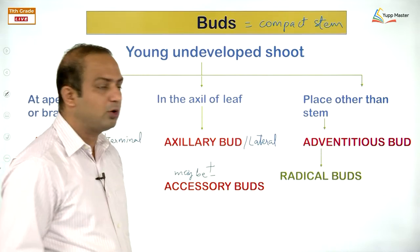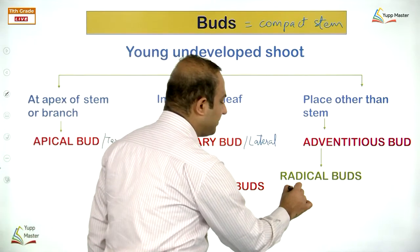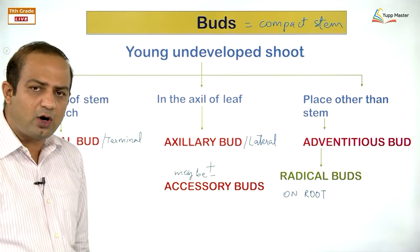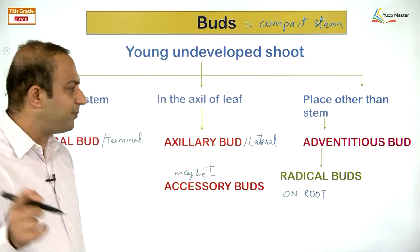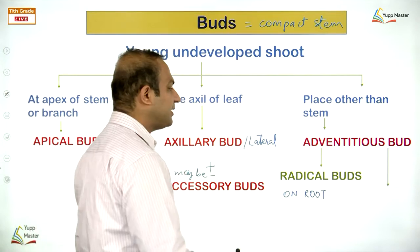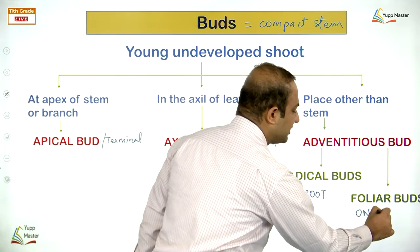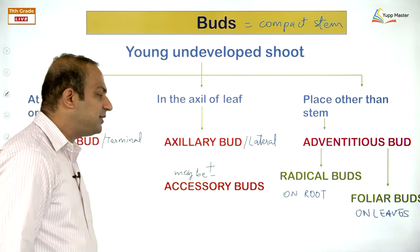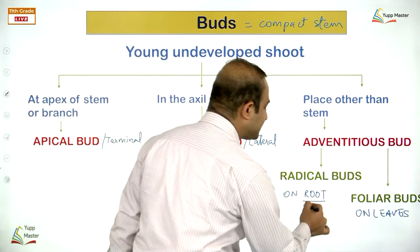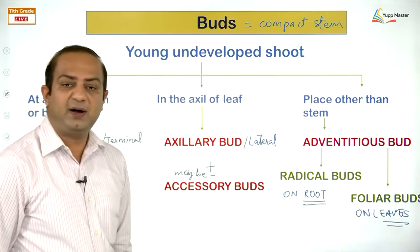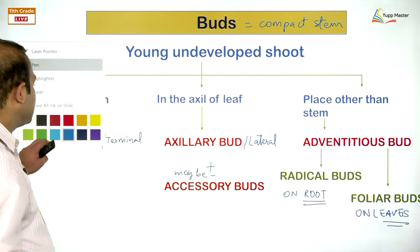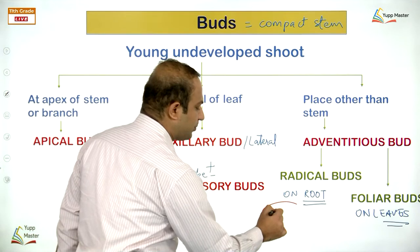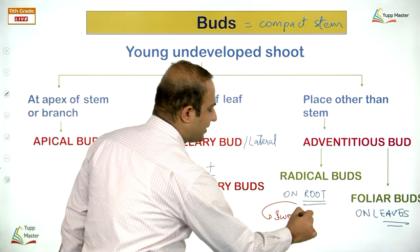One such modification is bulbils — swollen buds that act as propagules for vegetative propagation. A propagule is a structure that helps the plant propagate vegetatively. In garlic (Allium), the floral bud gets fleshy and forms bulbils. In Dioscorea, the vegetative bud gets condensed to form bulbils. Agave is another example — remember it is pollinated by bats.